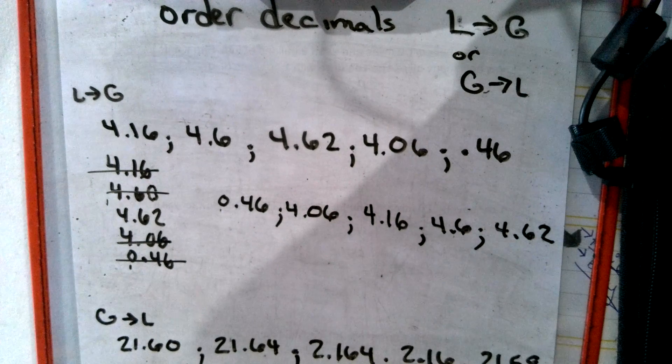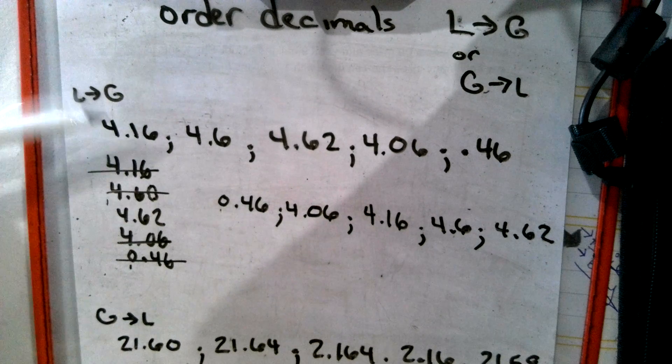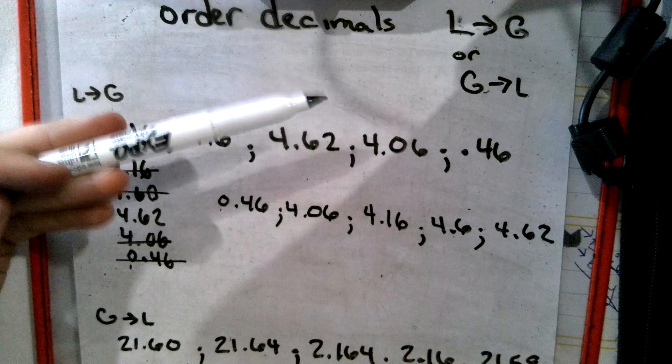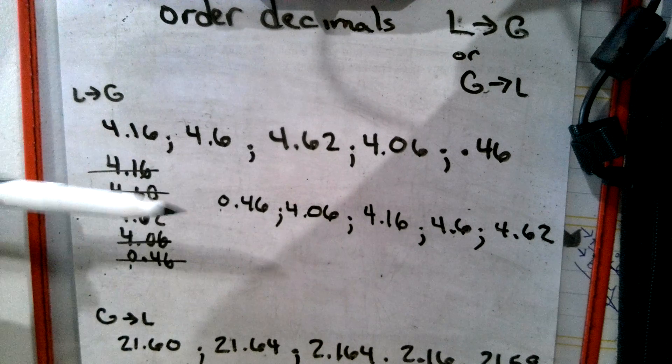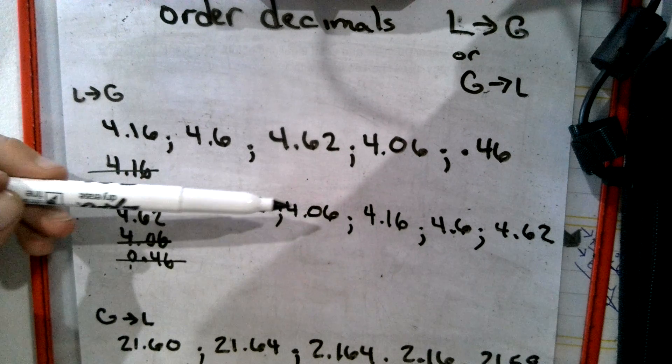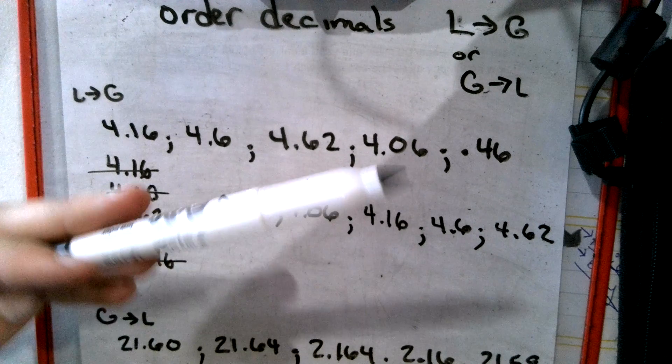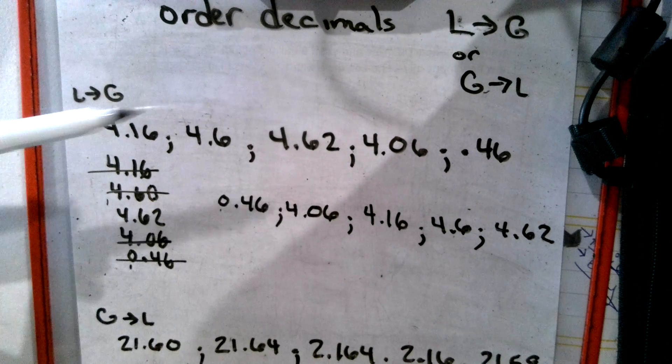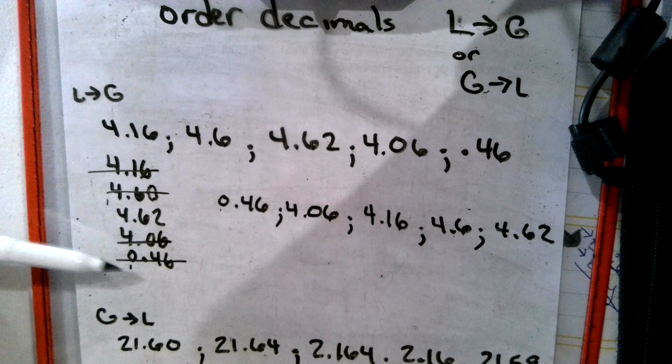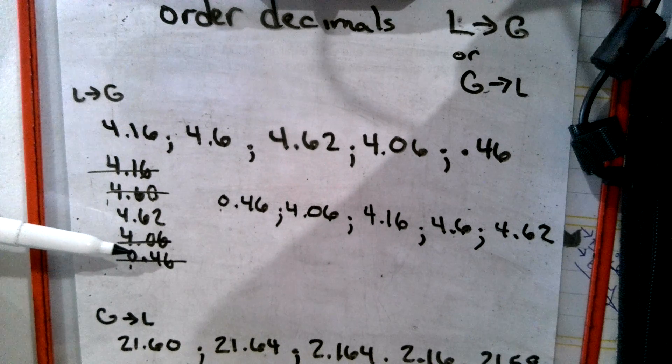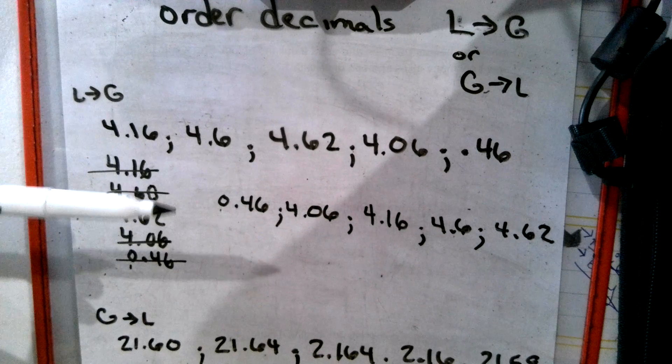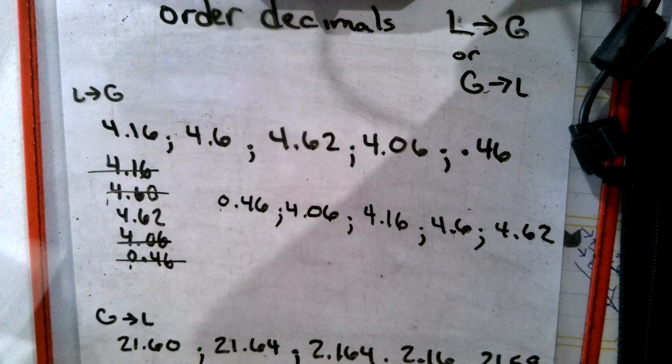And then our last but certainly not least would be our 4.62, which is 4 and 62 hundredths. If we thought about it money-wise, 4.16, 4.60, 4.62, 4.06, and 46, 46 cents is our smallest, 4.06 is next, 4.16, 4.60, 4.62. So these are all different methods. This is standard method lining up the decimal points. Some kids can visualize it. Least to greatest is smallest to biggest.